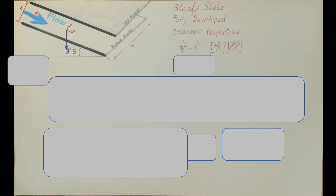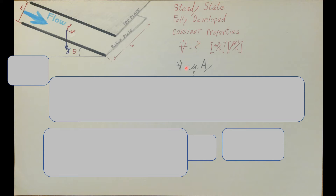Let's solve this problem. Volumetric flow rate — what kind of formula can we use? Volumetric flow rate is equal to velocity times area. The area we know, because we have h and w both given, but the velocity is not given and it will not be constant, because velocity will be a function. The units would be meters cubed per second or cubic feet per second. We are deducing a formula here, so we're not working with direct numbers.